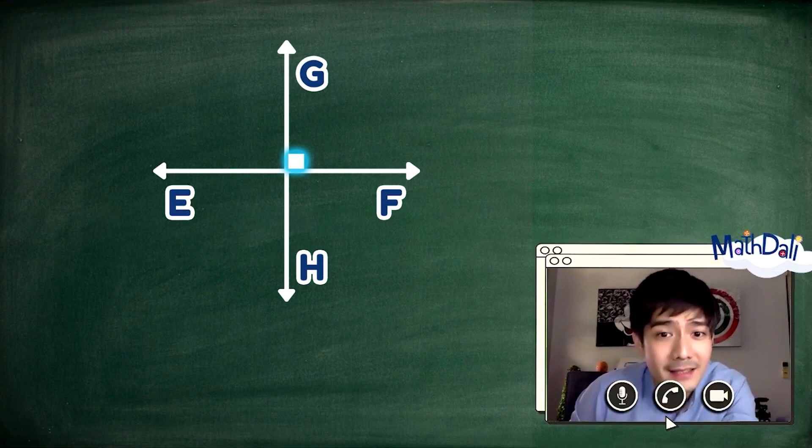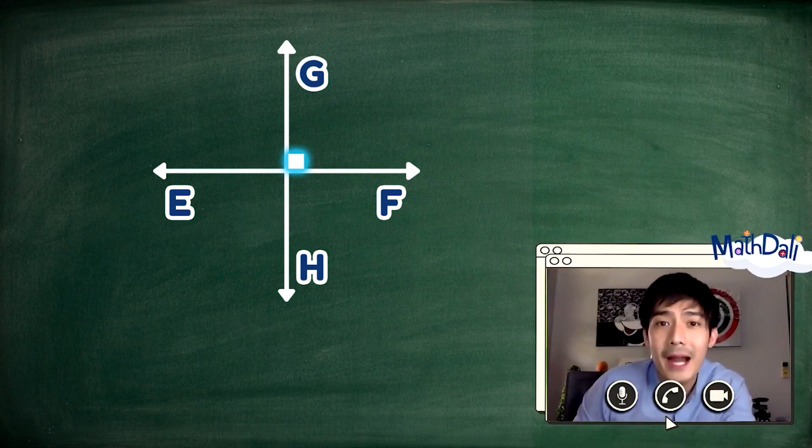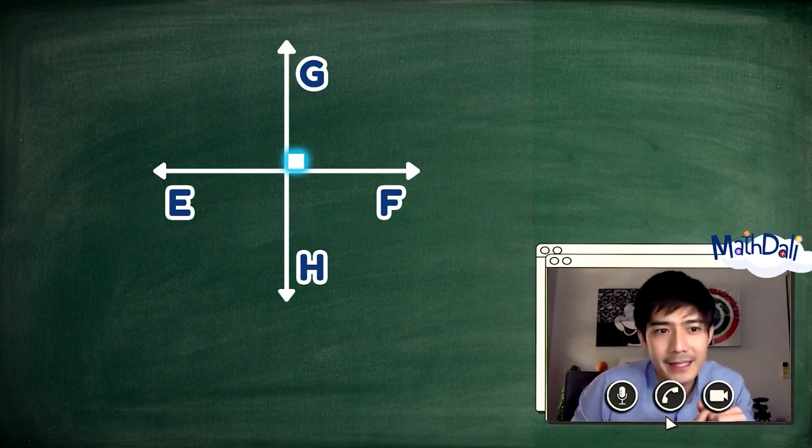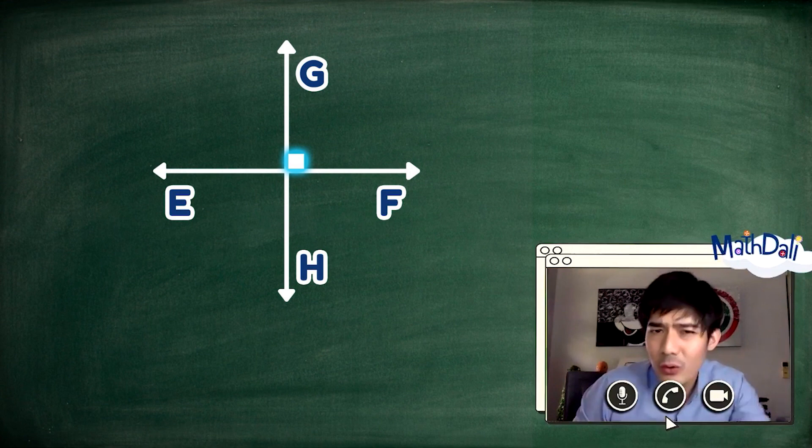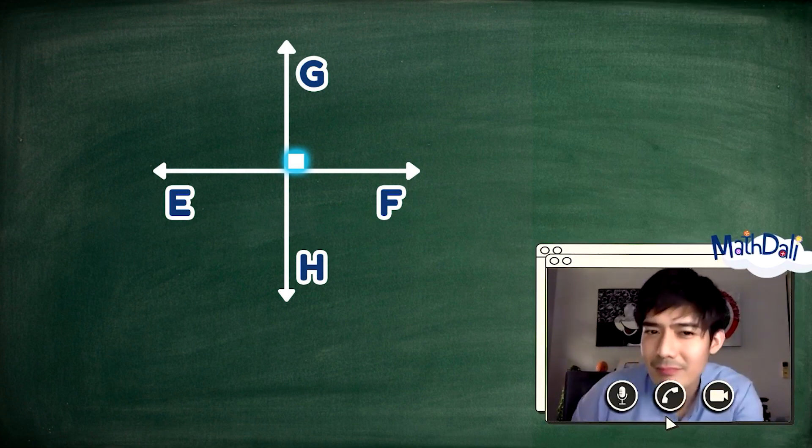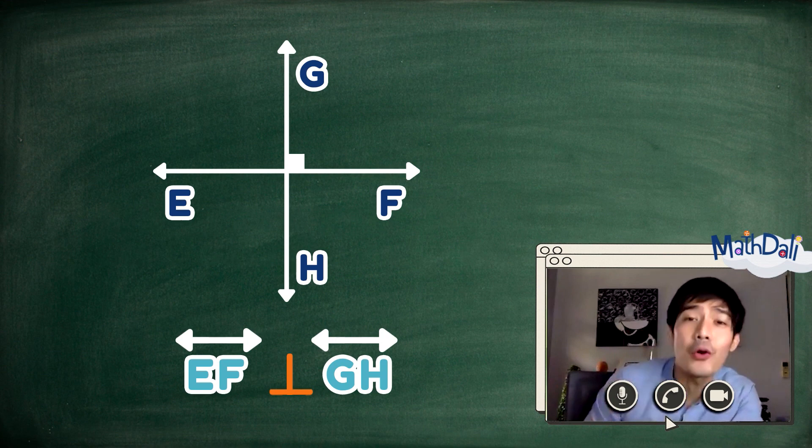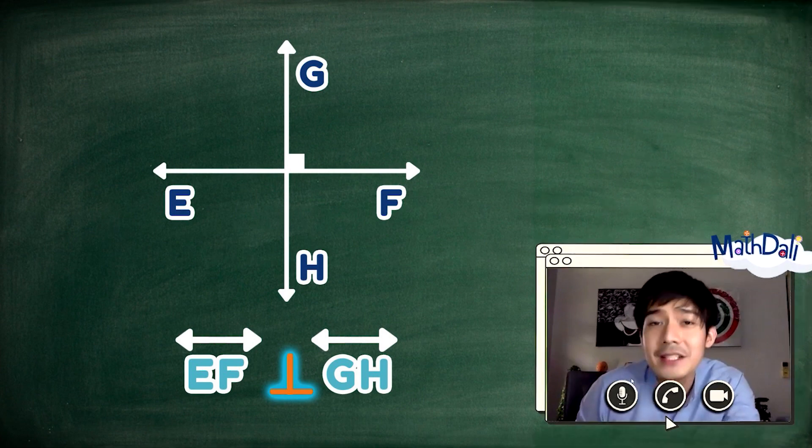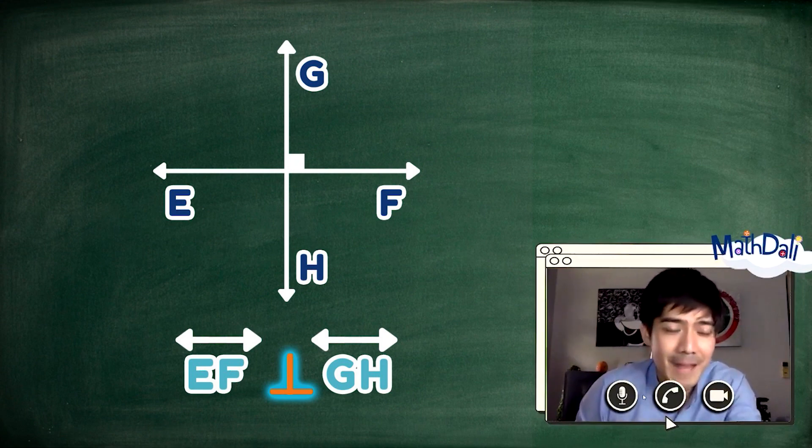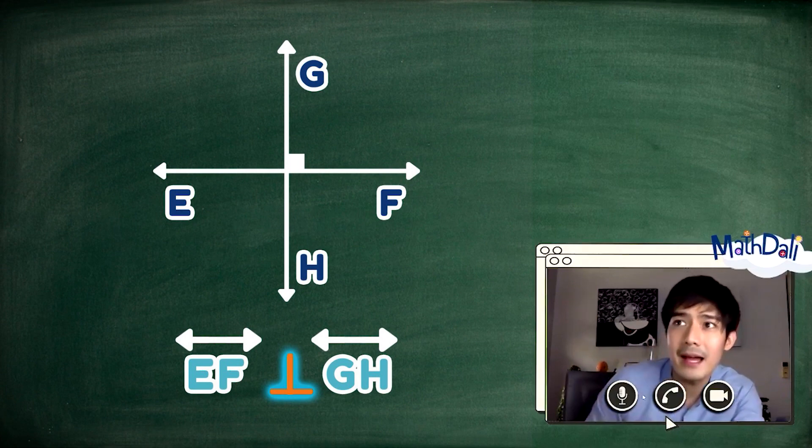Ito ay perpendicular lines. Ang line EF ay perpendicular sa line GH dahil ang pagtatagpo ng dalawa ay nakabuo ng apat na right angles. Minsan, nilalagyan natin ito, tulad na yung nakikita natin, ng small square para maipakita na ang mga angles ay right o nagpo-form ng 90 degrees angles. Ano ulit yung simbolo para sa ating perpendicular lines? Tama. Isang vertical at horizontal line. Kaya pag sinusulat natin ito, ang line EF ay perpendicular sa line GH. Pwede rin naman ang line GH ay perpendicular sa line EF. Ang perpendicular sign, pwedeng isulat yan na parang baliktad na letter T.